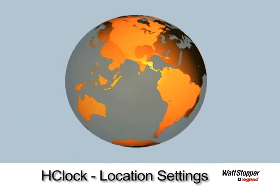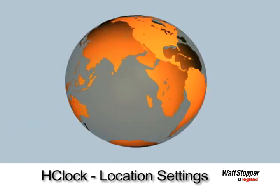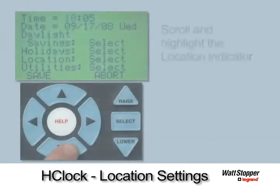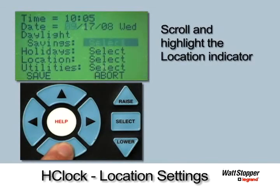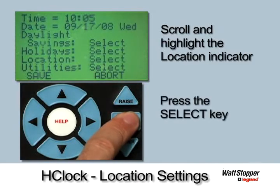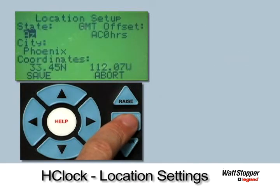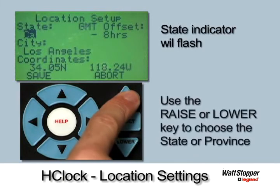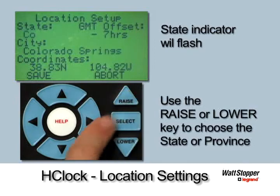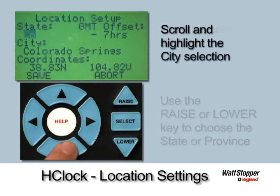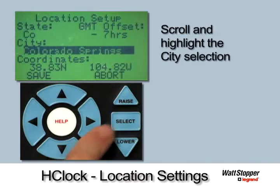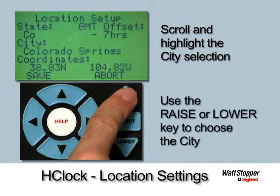A specific geographical location is required in order to determine the correct sunrise and sunset. Simply scroll down using the bottom arrow on the navigator until Location is highlighted, then press Select. The Location Setup screen will appear. The state indicator will be flashing. Use the raise and lower keys to scroll to the state or province desired. Highlight the city selection by using the navigator bottom arrow, and apply the same procedure to the choice of city.